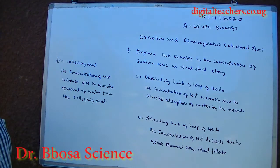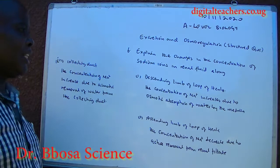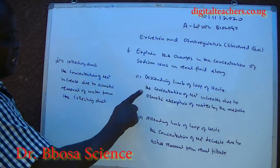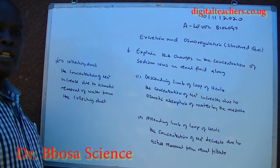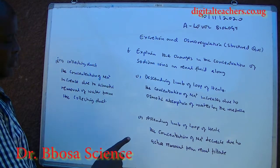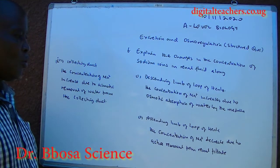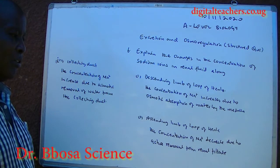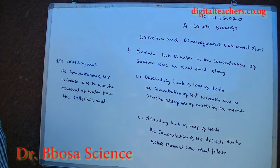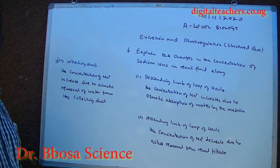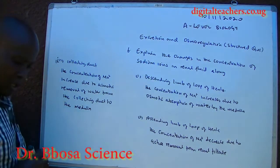Number six: explain the changes in concentration of sodium ions in the tubular fluid along the descending loop of Henle. The concentration of sodium ions increases due to osmotic absorption of water by the medulla. It further increases due to osmotic removal of water from the collecting duct.